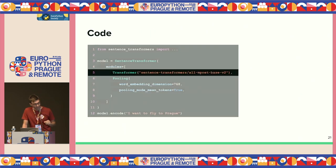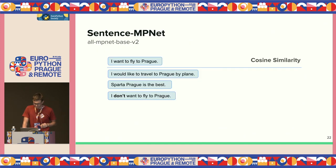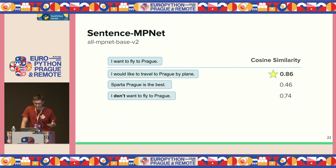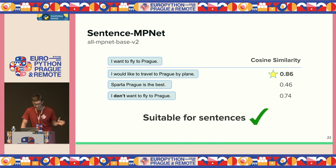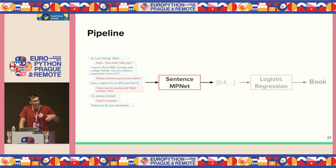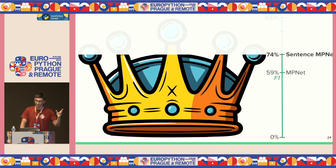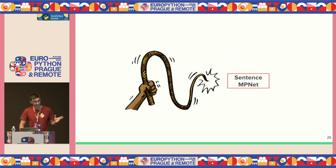With sentence transformers, we just plug in the model name in our code and we're good to go. Computing the cosine similarities again, suddenly these similarities start to make sense: 'I want to fly to Prague' and the synonymous sentence finally have the highest cosine similarity. Sentence transformers and Sentence MPNet are suitable for representing sentences, short text, and dialogues. Let's extract embeddings, train logistic regression, run evaluation — we get an F1 score of 74%, an improvement from 59%. Good start, but we'd like to do better.